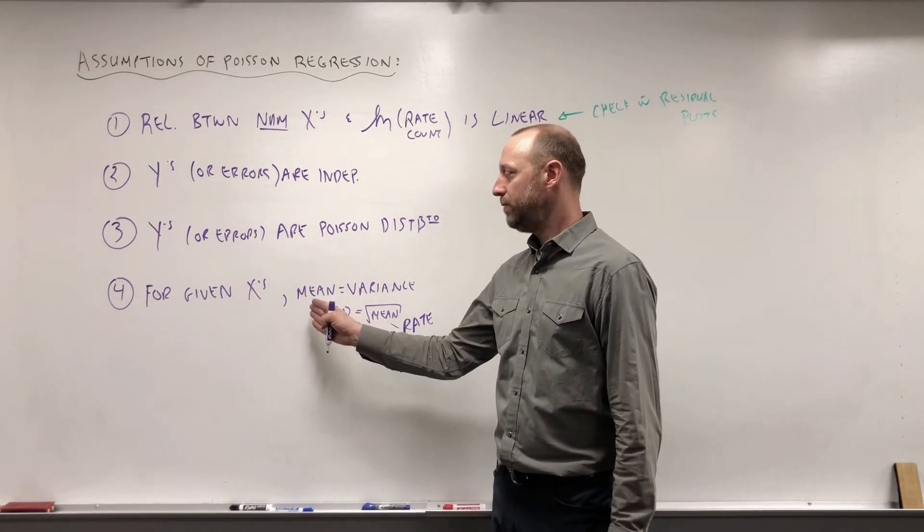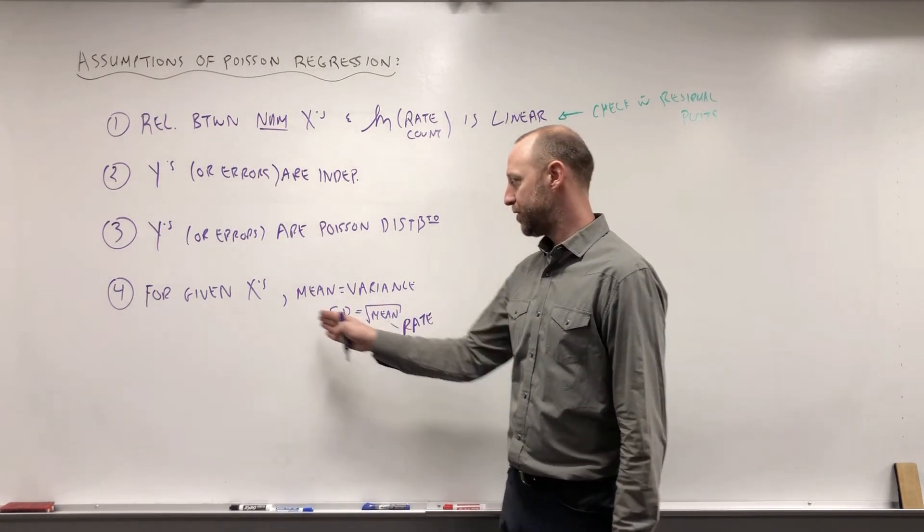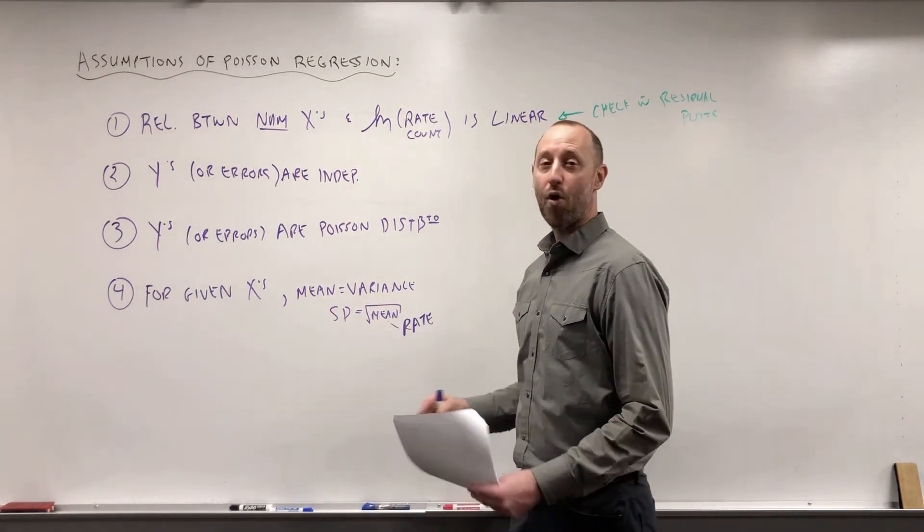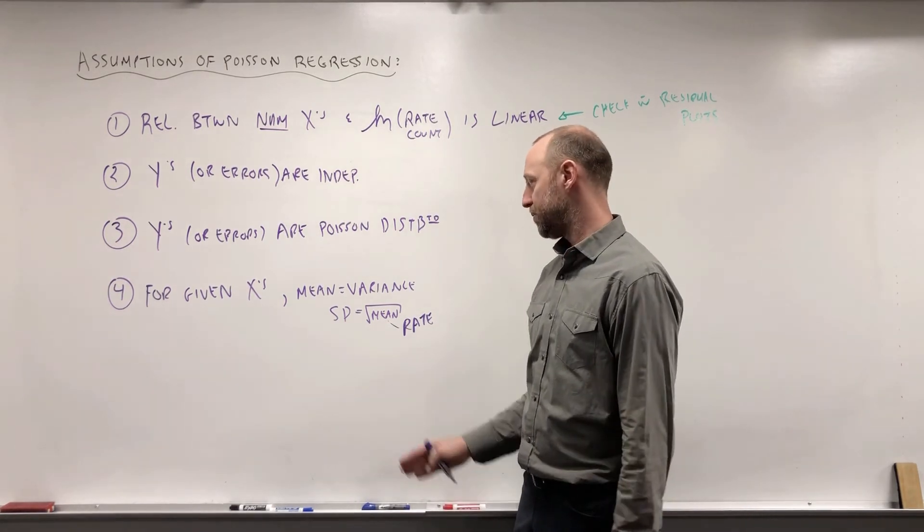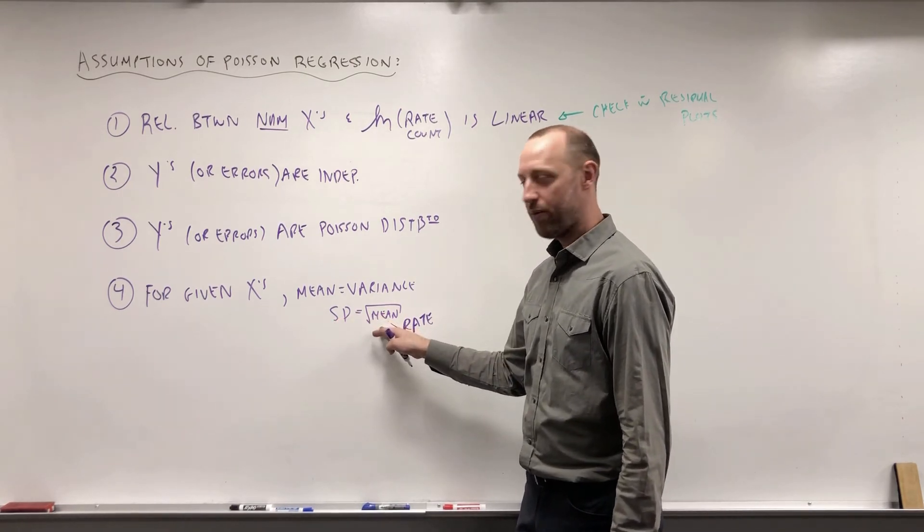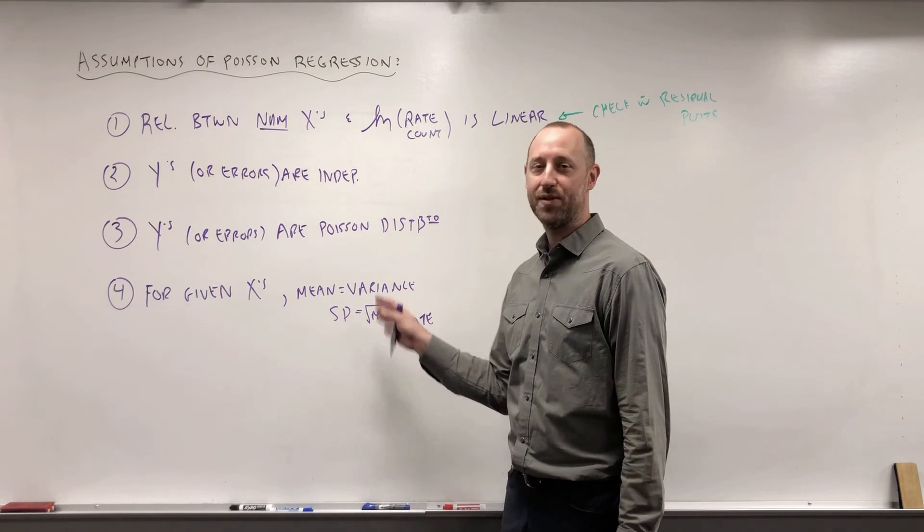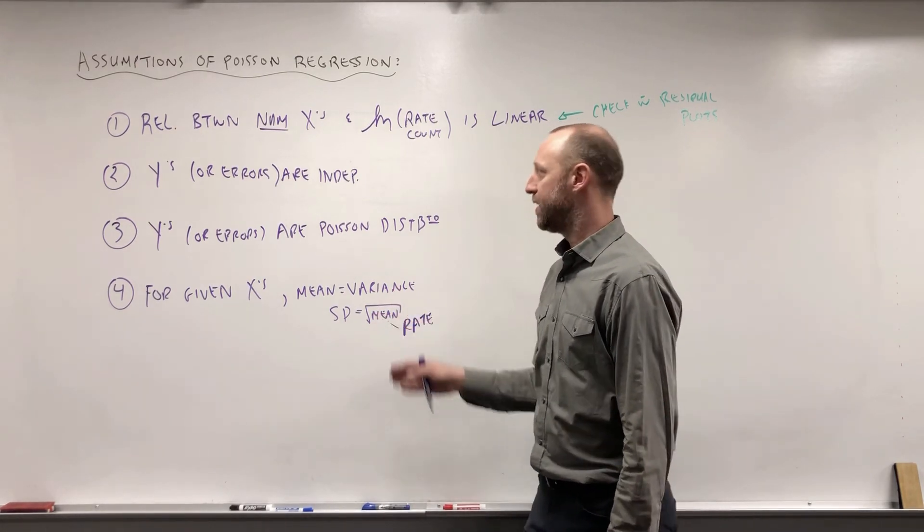Now this is one we're going to talk about in next week's lectures, about checking and addressing. So we'll check the idea of over-dispersion or under-dispersion. If the variability is actually greater than the square root of the mean, that's called over-dispersion. We'll talk about when that happens, why it can happen, and ways we can address that.